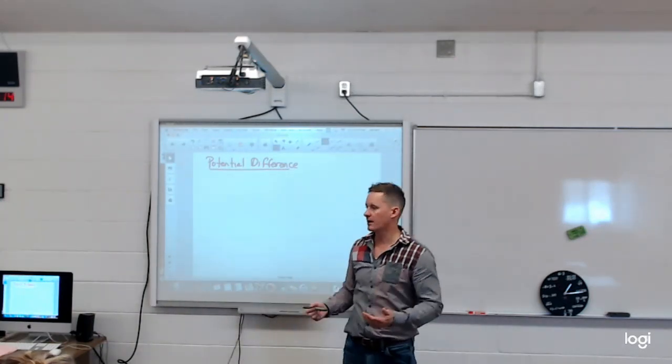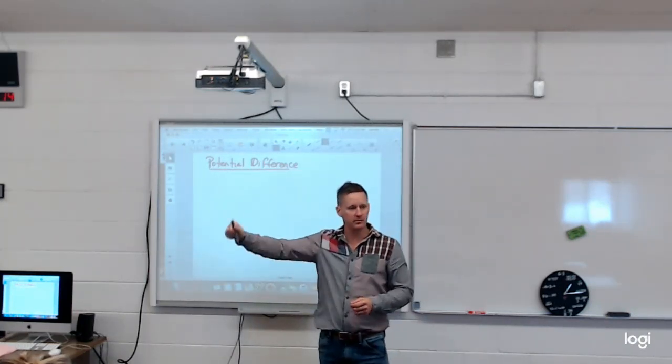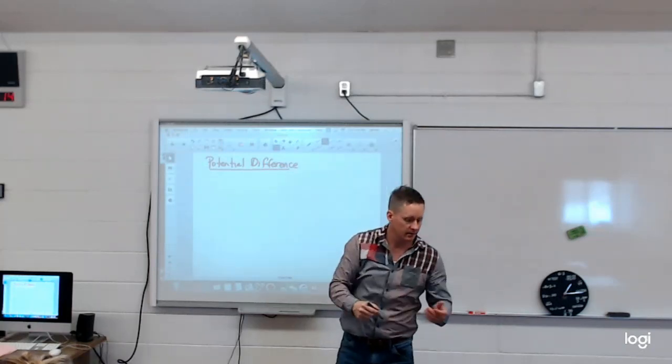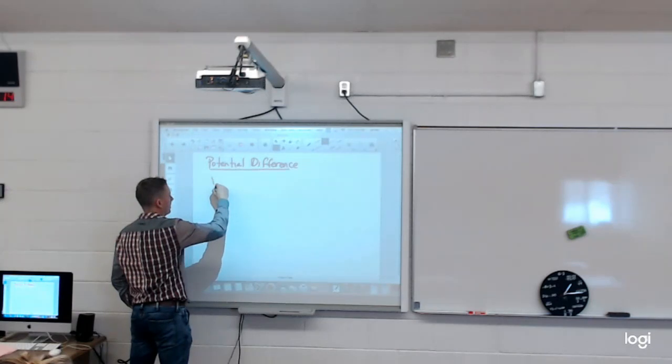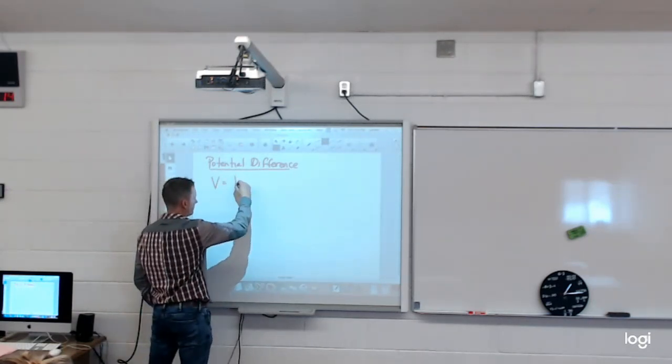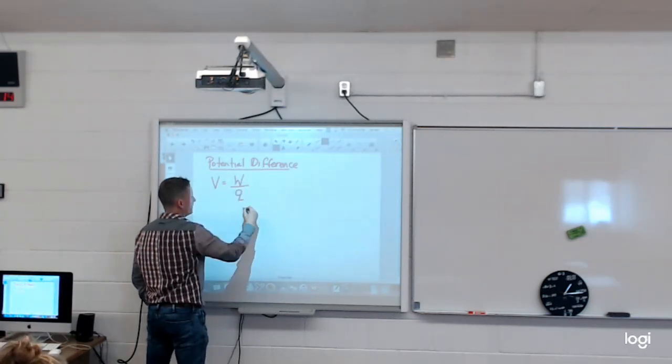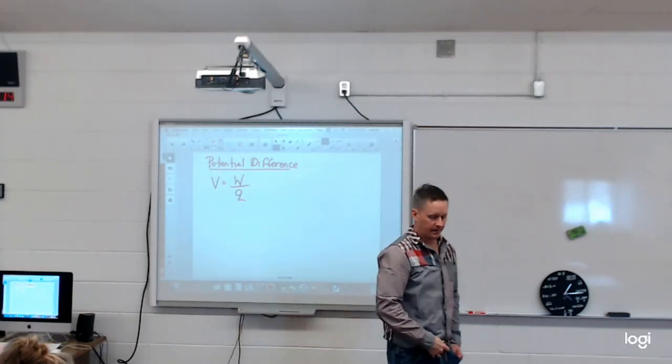There's a difference in potential by moving the electron from one spot to another spot. And to figure out what your potential difference is, we've got it measured in V, which is volts. The amount of work that's required to move it divided by the amount of charge.